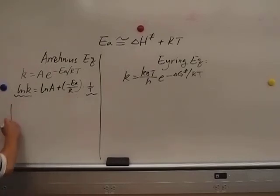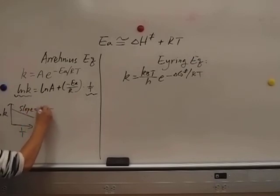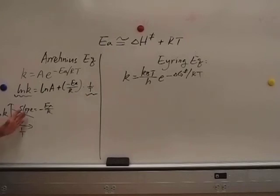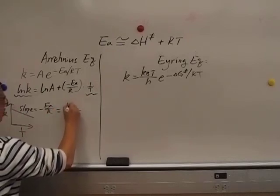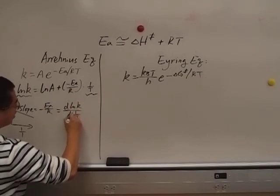Therefore we can easily plot ln K versus 1 over T and we'll get a straight line. The straight line has a slope of negative Ea over R. And remember the slope is simply dy over dx, so we have d ln K over d(1 over T).